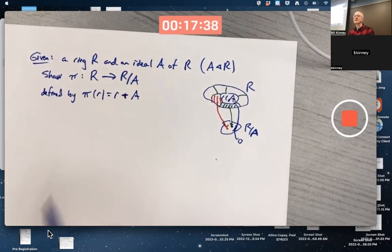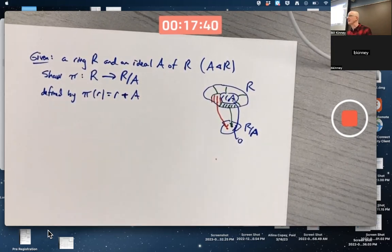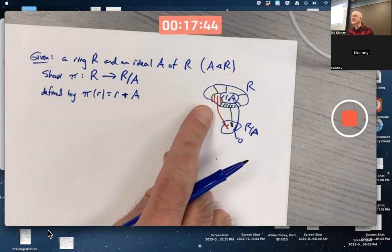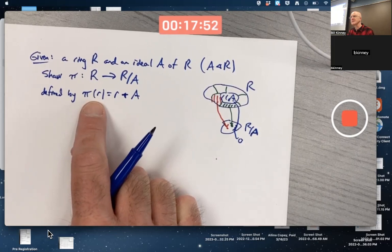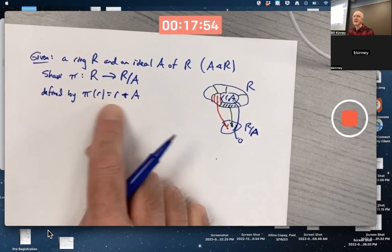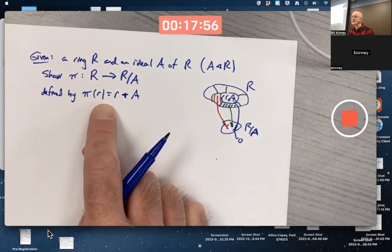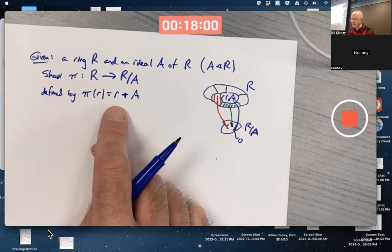This is defined by the formula pi of R equals R plus A. By the way, there's no need to show that this is well-defined here. Because you're talking about a ring that has individual elements that are not cosets. You don't have to worry about representatives. We are talking about mapping individual elements of R to cosets, not the other way around. So there's nothing to do with showing this is well-defined here. This is definitely well-defined.